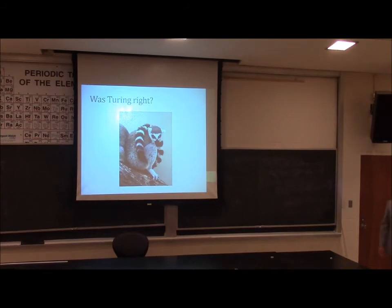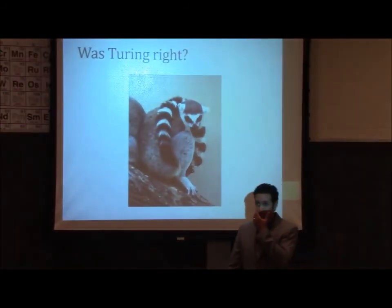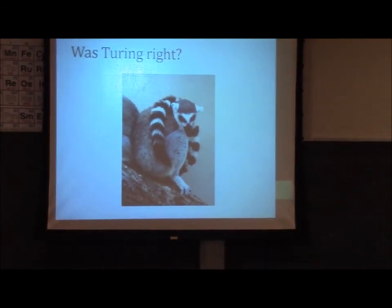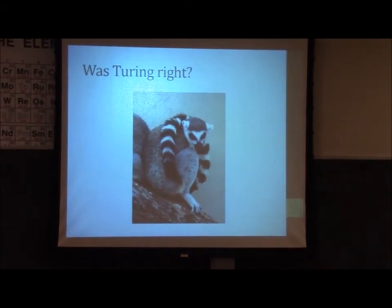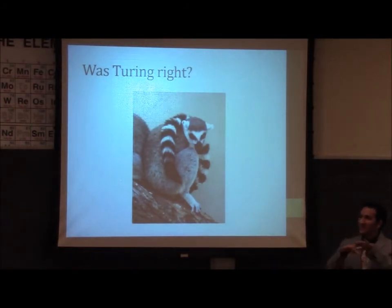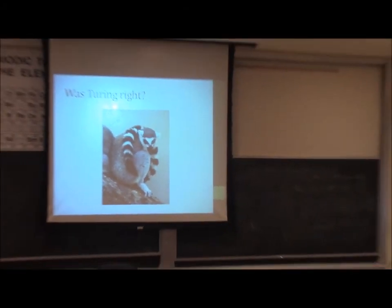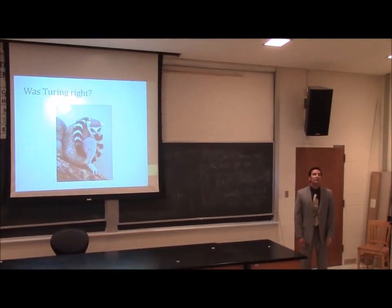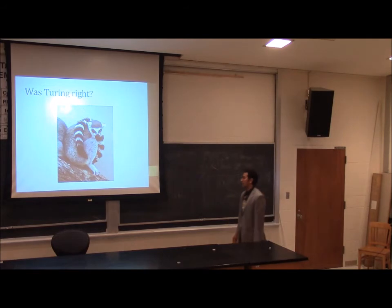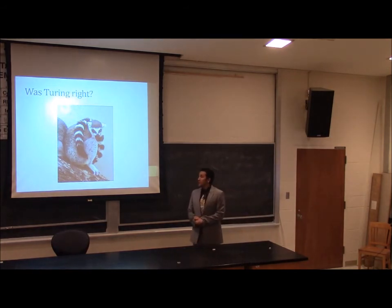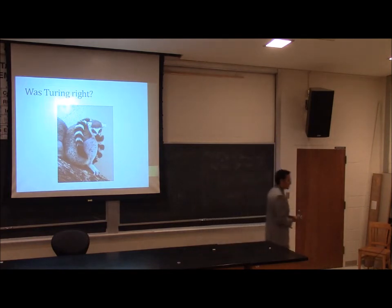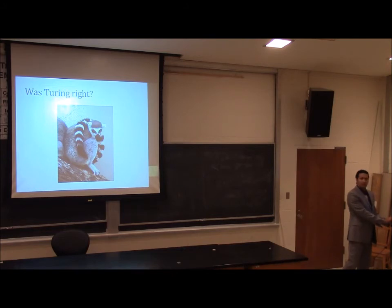The big question: was Turing right? What do you notice about this animal? Solid body color and a striped tail — this is a direct violation of the predictions of Turing's theory. This is called the ring-tailed lemur, a primate that lives on the island of Madagascar off the coast of southern Africa. This flies in the face of everything Turing was talking about. But does that mean Turing's model is a failure?